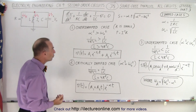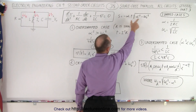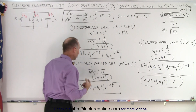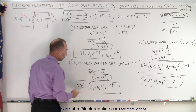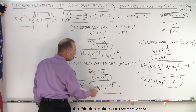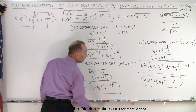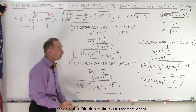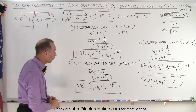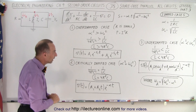In the critically damped case, you only have one S value. The radical goes to zero, so S equals negative alpha. Therefore the solution is A1 plus A2 times time, all multiplied by e to the minus alpha T, where alpha is the singular solution of that characteristic equation.